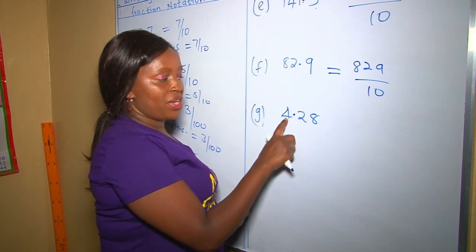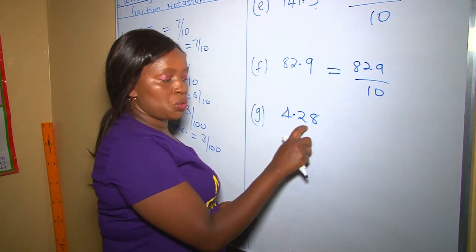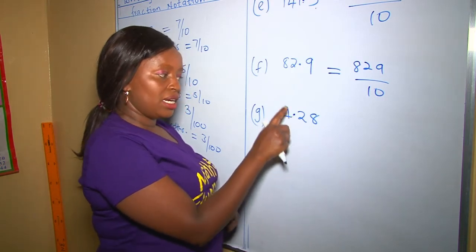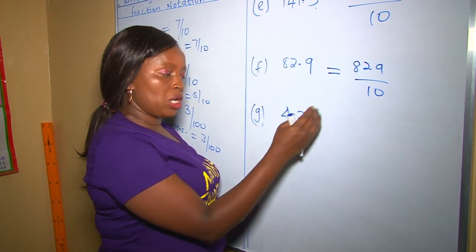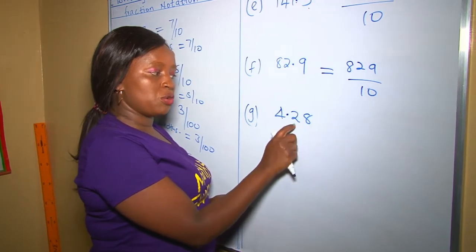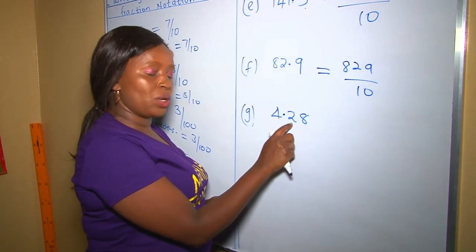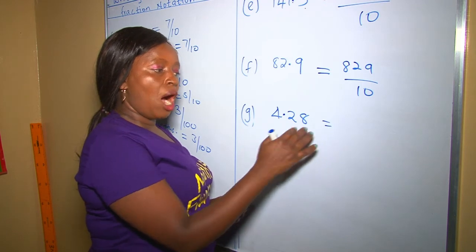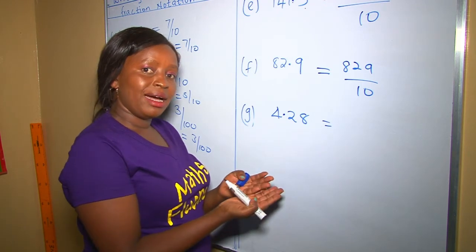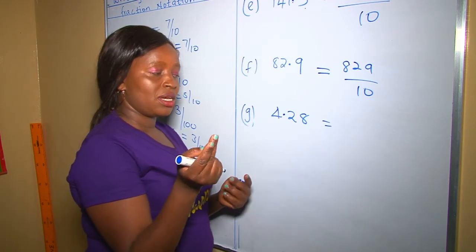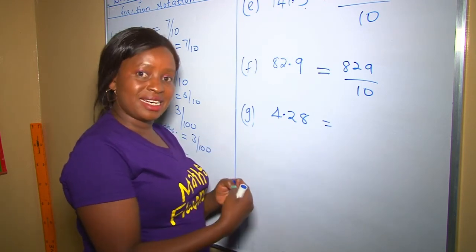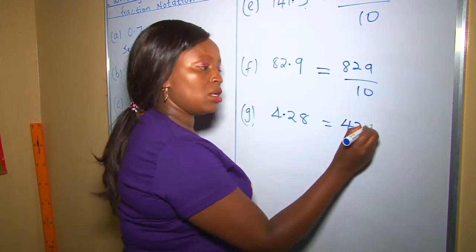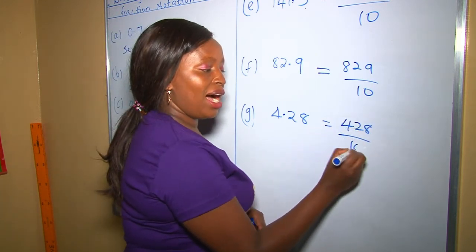Here we have 4.28. After the decimal point on our right, we have two digits: two and eight. Meaning that our denominator should have two zeros, which is a hundred. So it shall be four hundred and twenty-eight over a hundred.